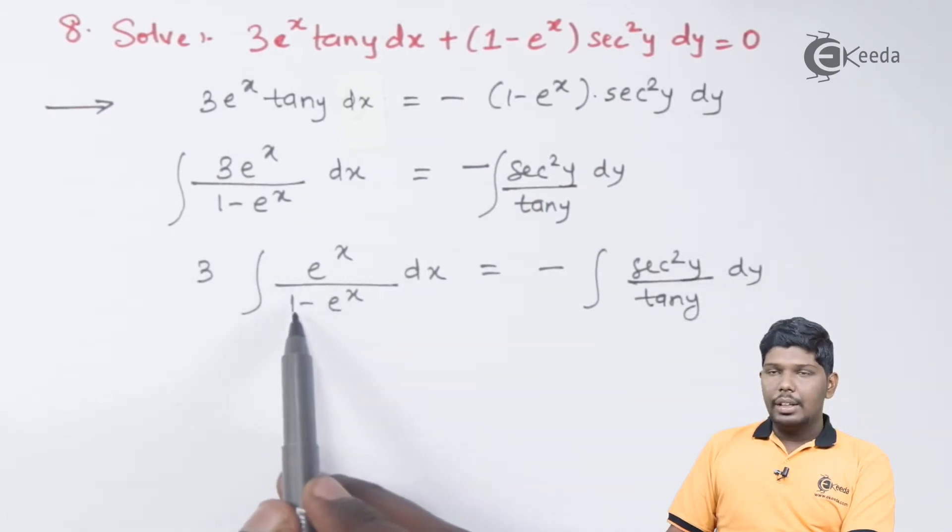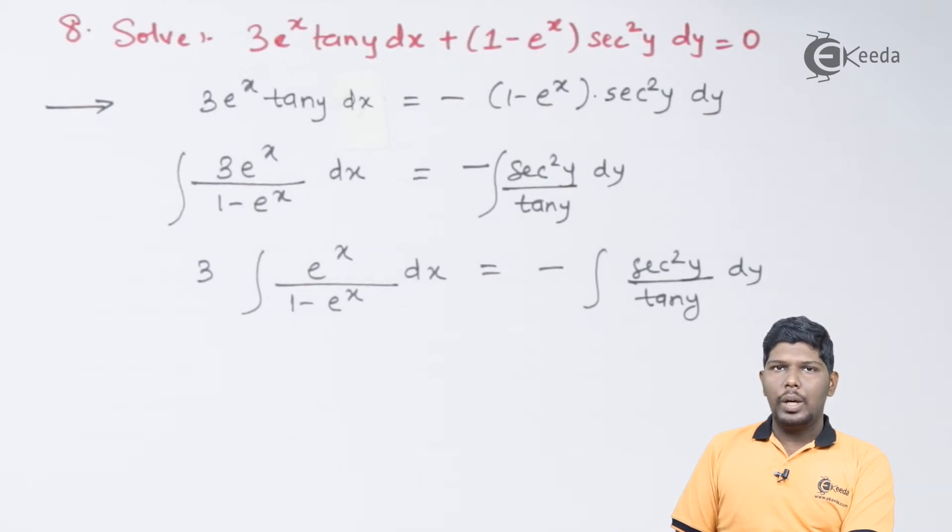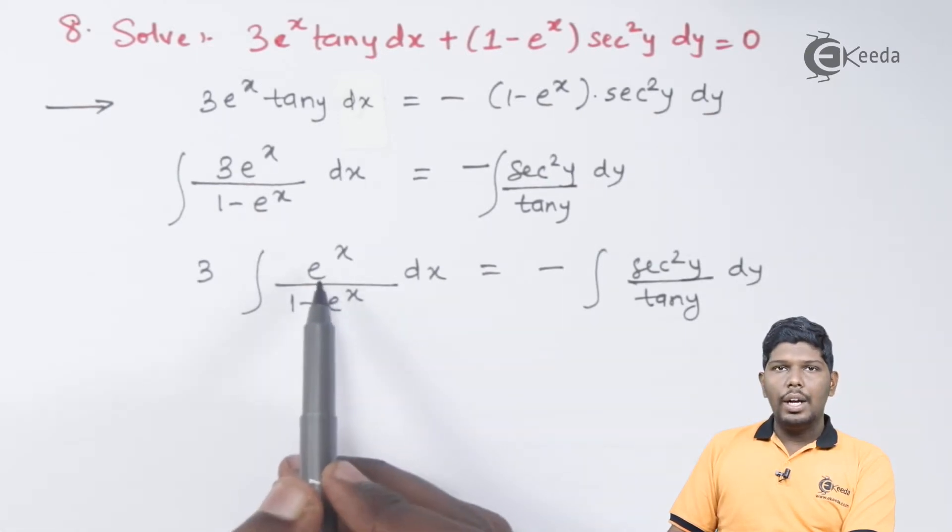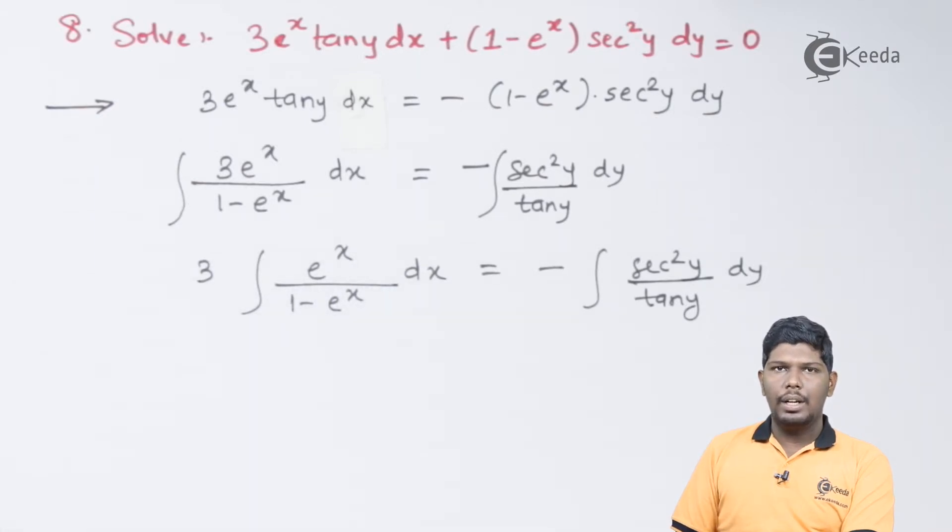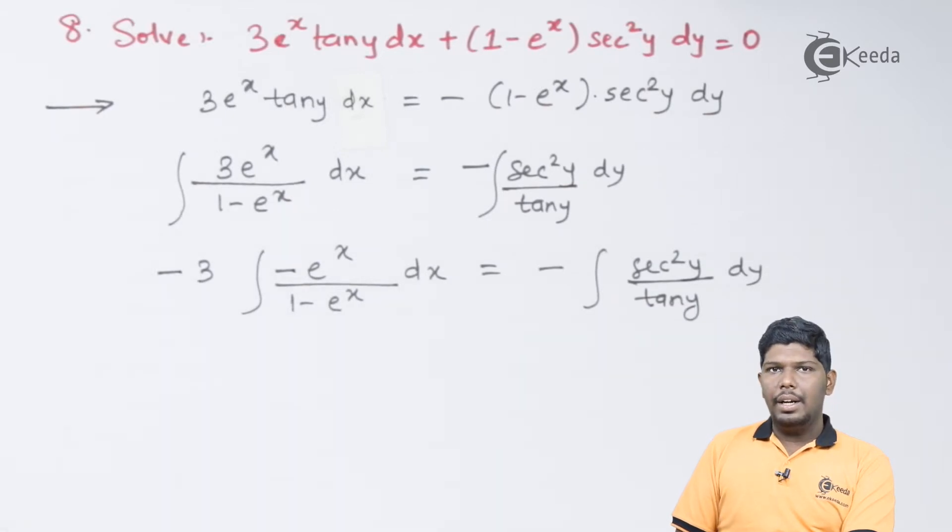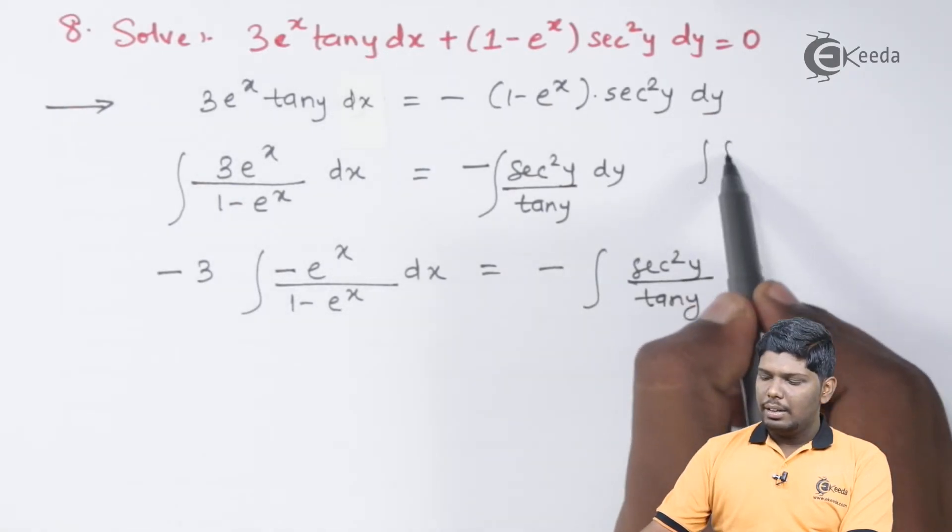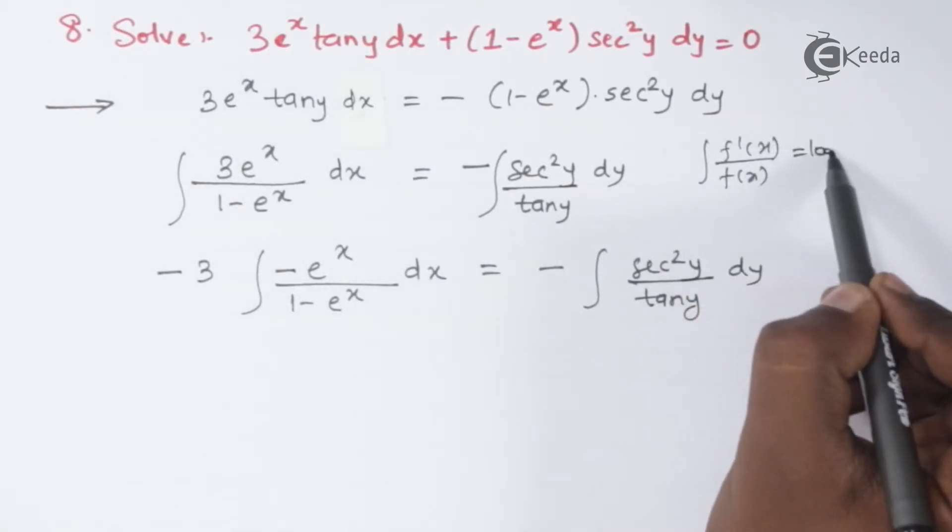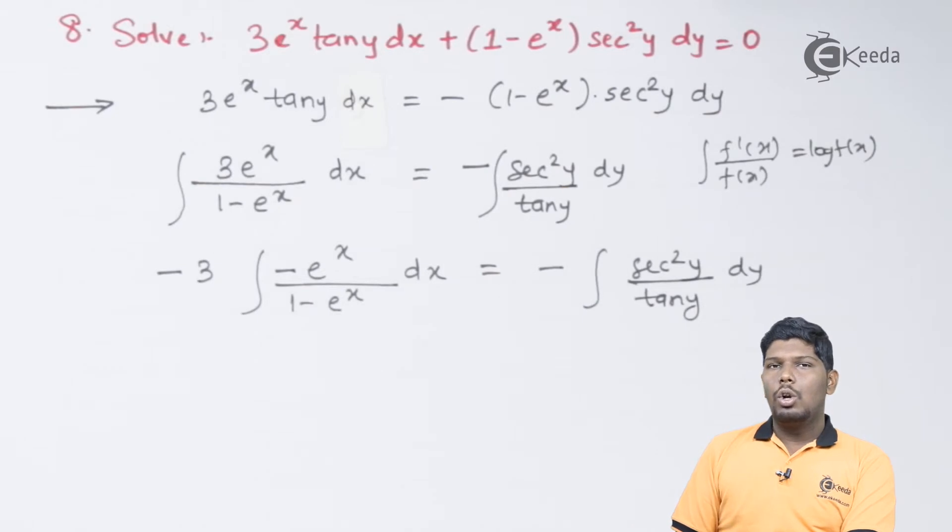Now, if you consider the derivative of 1 minus e raise to x, it will be minus e raise to x. And we have already e raise to x present in the numerator. So, if I adjust this minus sign, giving a minus sign outside the integral, this integral becomes in the form of integral f dash x upon f of x. And we know that this is equal to log f of x.